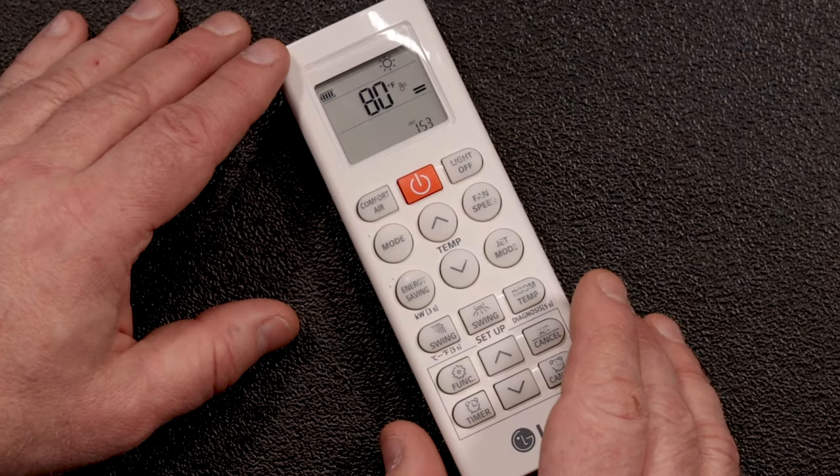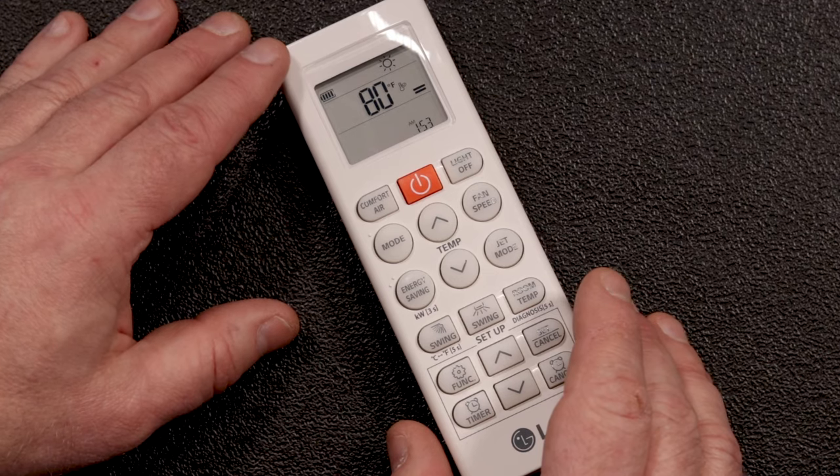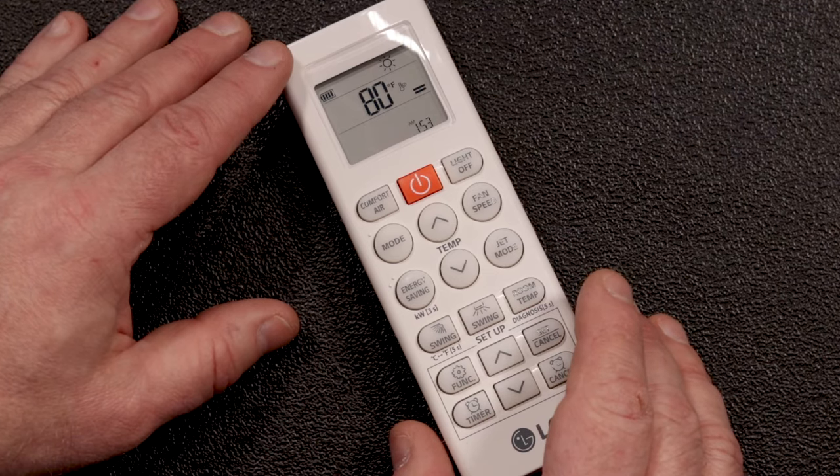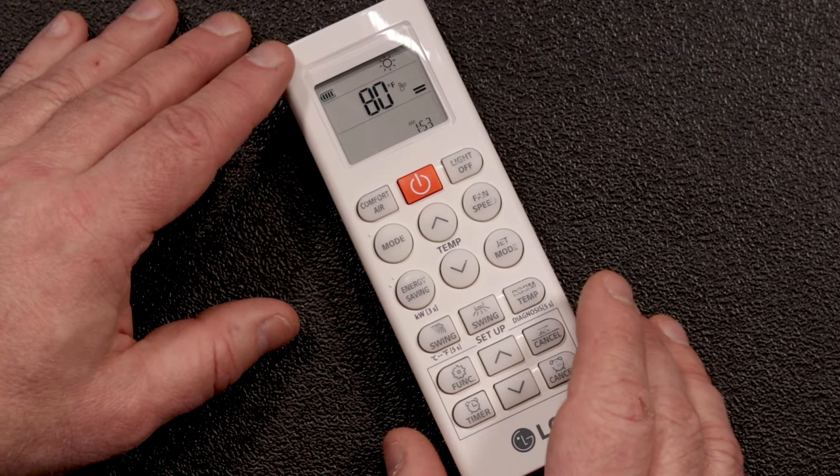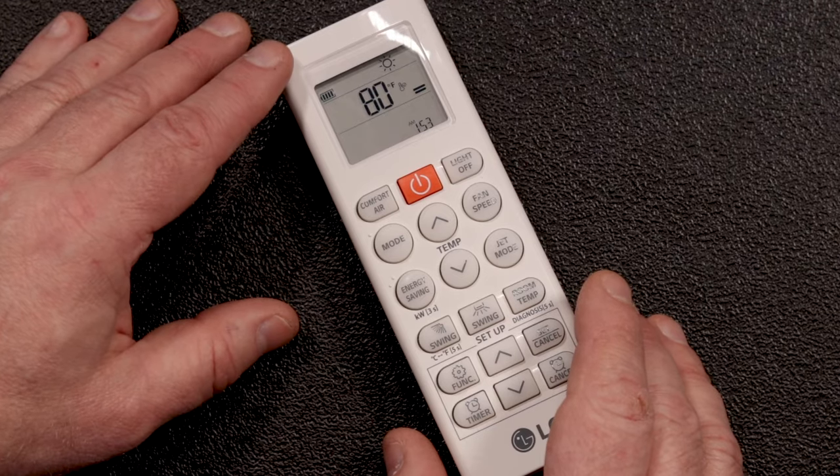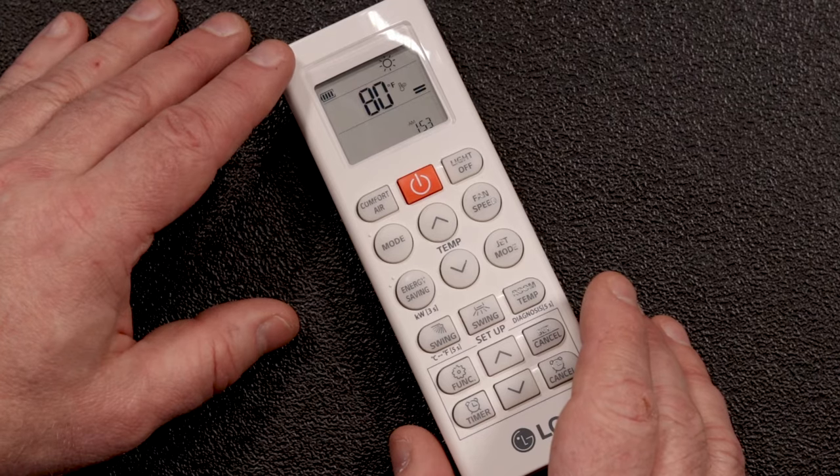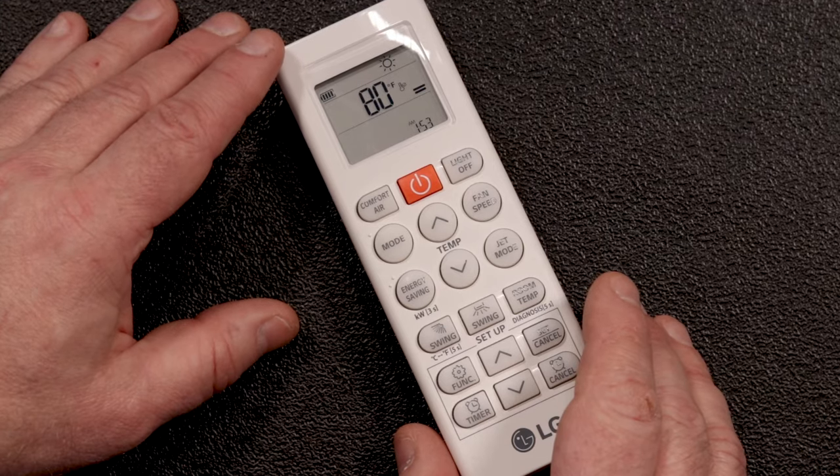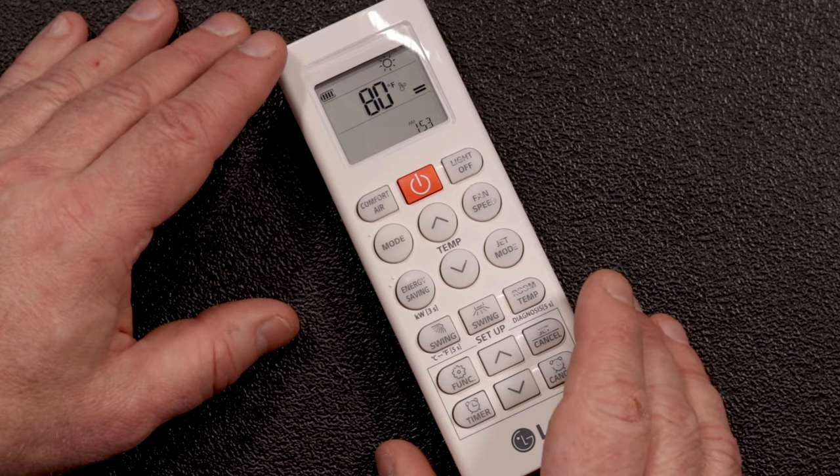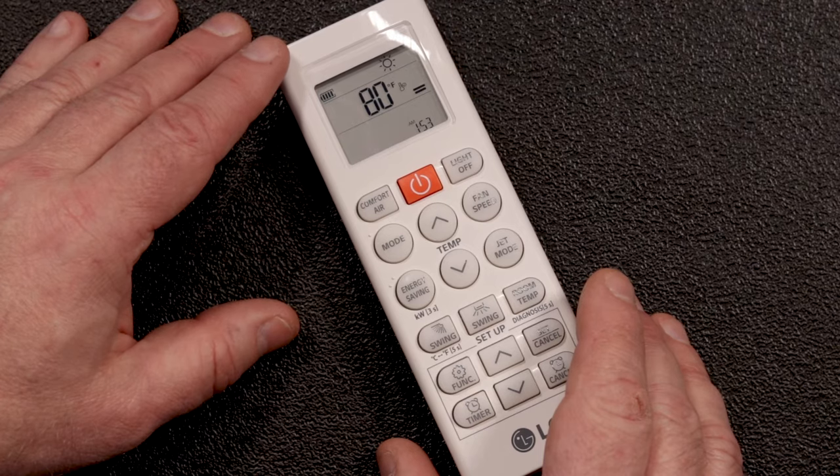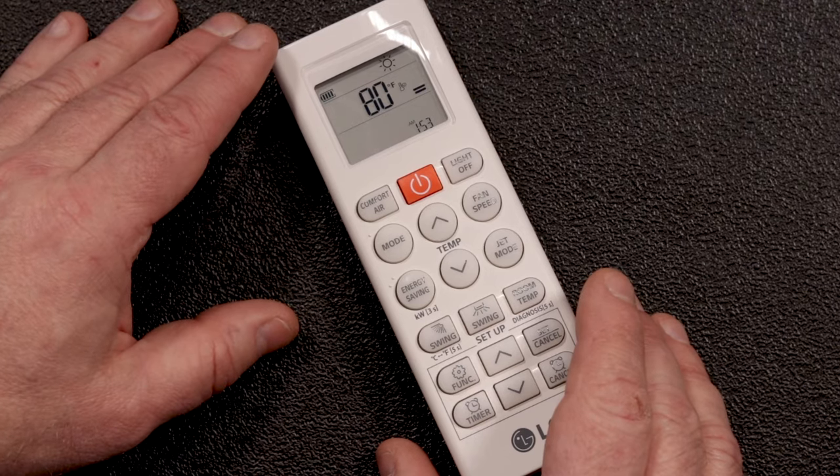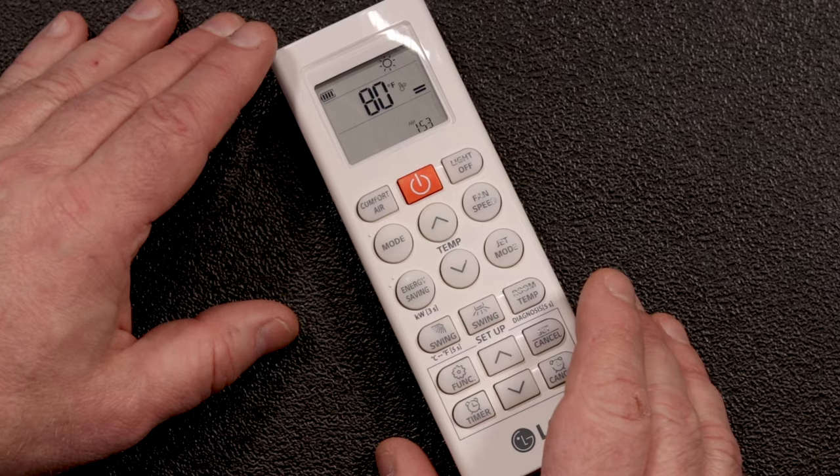One important thing to remember is that if you have multiple indoor heads connected to a single outdoor unit, you can't have some in heat mode and some in cool or dry mode. This will cause the system to shut down. You can mix heat, fan, and off modes. You can also mix cool, dry, fan, and off modes. But you can't put the system in a configuration where it's trying to heat and cool or dry at the same time. This problem usually comes up in the fall when people turn on their heat for the first time, and in summer when folks first turn on their air conditioning.